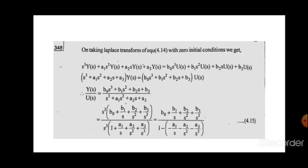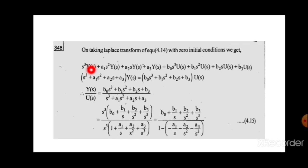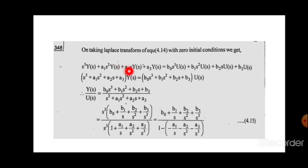When we take the Laplace transform of this equation, the third differential term gives s³·Y(s). We are not taking initial conditions, so other terms cancel out. The next term a₁y-double-dot gives a₁s²Y(s). Similarly, we get a₂sY(s) plus a₃Y(s) on the left side, and b₀s³U(s) plus etc. on the right side.